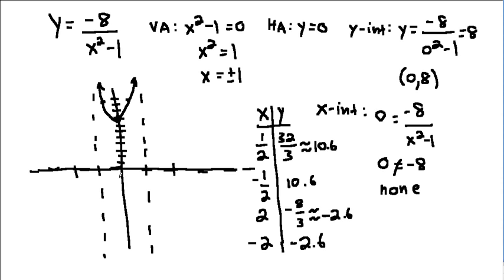So we can plot those to negative 2.6 is about here, to negative 2, negative 2.6 is about here. And now, you can make the last part of the graph. And you're done.